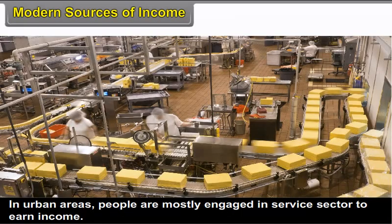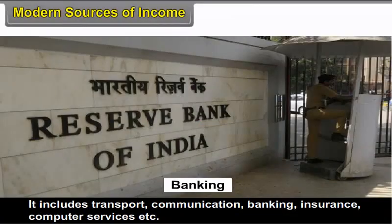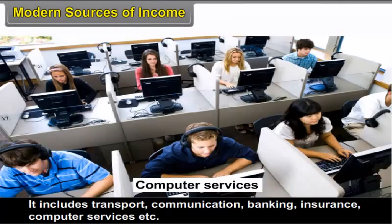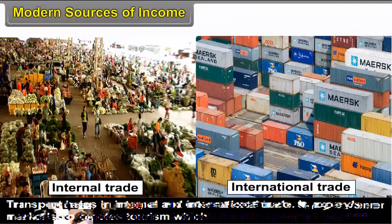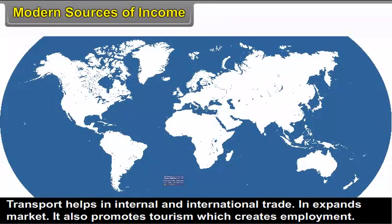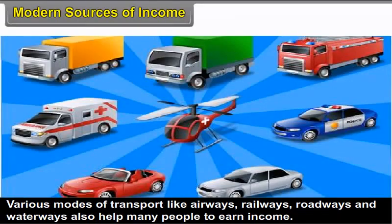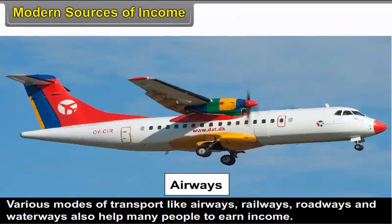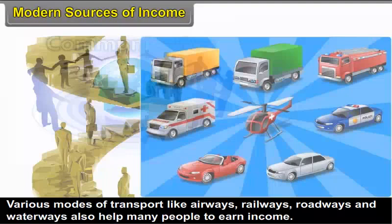Modern Sources of Income. In urban areas, people are mostly engaged in the service sector to earn income. It includes transport, communication, banking, insurance, computer services, etc. Transport and communication are the nerves of the economic system. Transport helps in internal and international trade, expands the market, and promotes tourism which creates employment. Various modes of transport like airways, railways, roadways, and waterways also help many people to earn income.